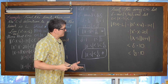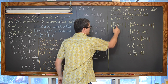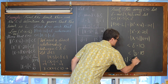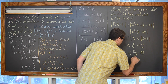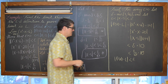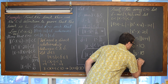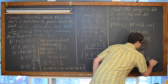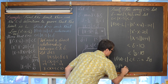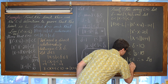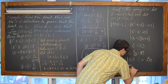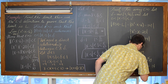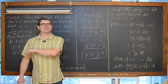So by definition, the limit as x approaches 5 of x squared minus x minus 6 is indeed equal to 14. And that is the end of our second example.